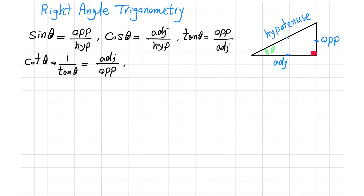We also have the concept of secant of theta, which is the inverse of cosine of theta, and is equal to the hypotenuse side divided by the adjacent side.